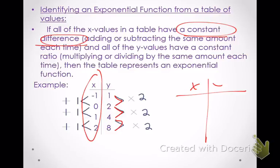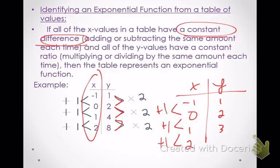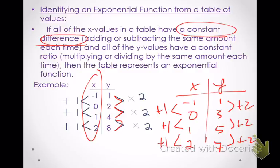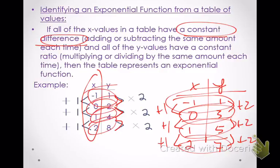A linear function would have a constant difference in y values as well — we're adding the same number each time rather than multiplying. For example, if x increases by 1 and y increases by 1 each time, or increases by 2 each time, that's a constant difference — graphing those points gives a line, making it a linear function. The key distinction: multiplying gives a constant ratio (exponential); adding gives a constant difference (linear).